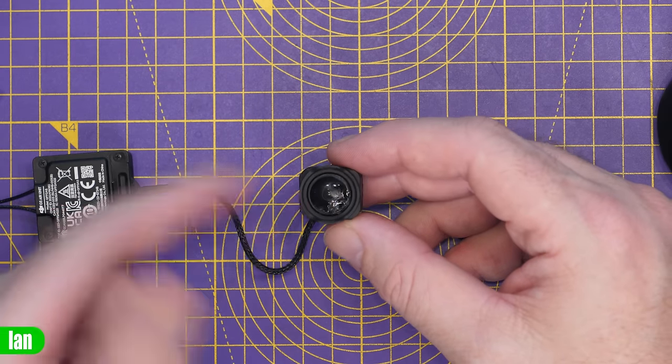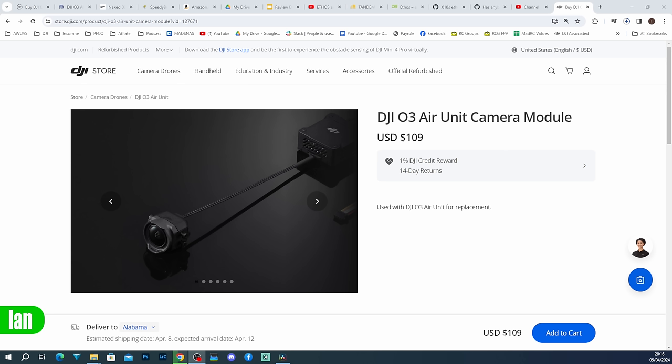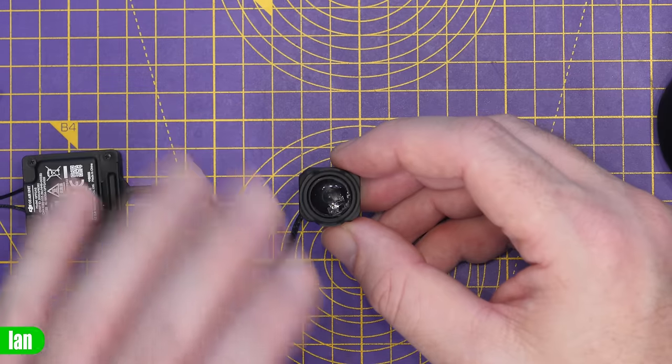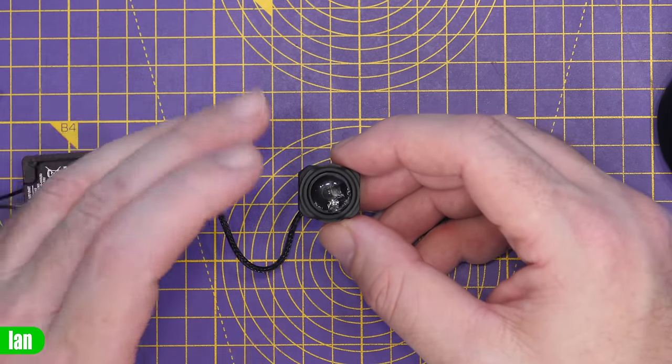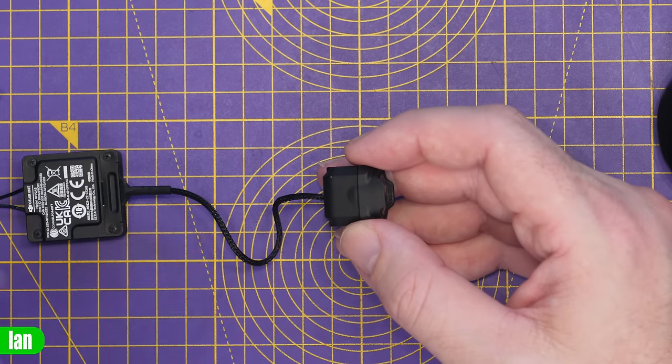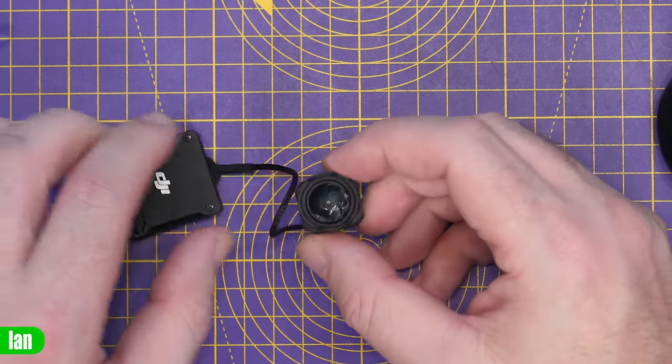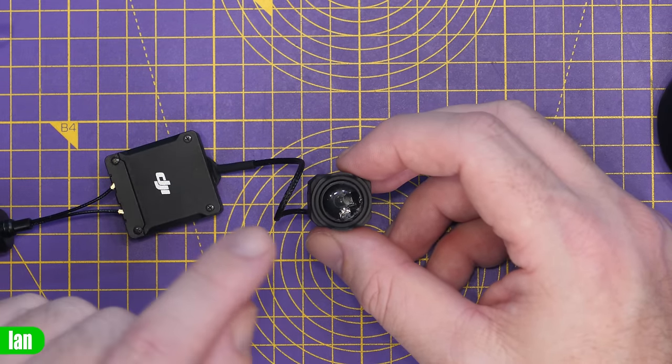DJI do sell these camera modules on their own. They're available for about £90 in the UK, or about $109. That is the whole camera module that you see here, and that is an official replacement available directly from DJI or its official dealers. That will work exactly the same as the original camera did with your O3 air unit. The only thing you would need to do though is calibrate that new camera before you use it.